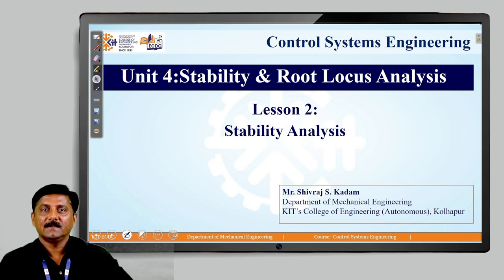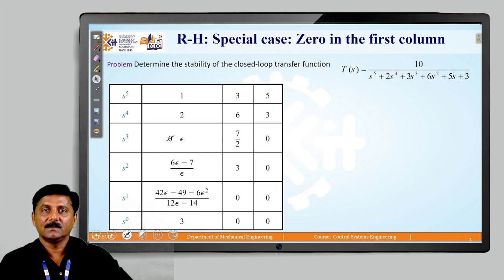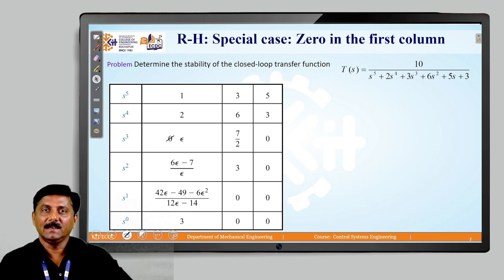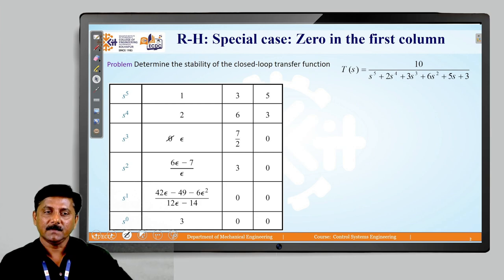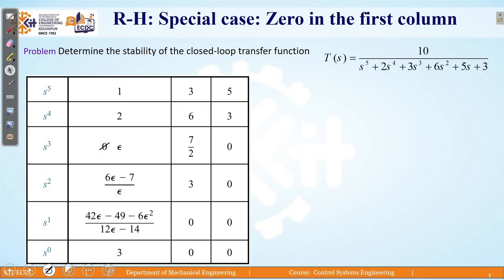To continue with this, there are a few cases involved, out of which the first important case will be related to the part of a row element in which the third row element has a 0 in the first column. We will look at these cases one by one and see how those cases are to be handled with the special considerations. Here, when we start with a special case that is the Routh-Hurwitz special case: a 0 in the first column.